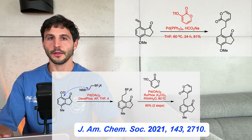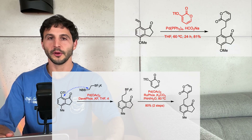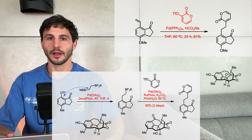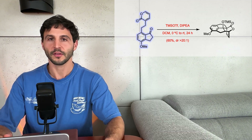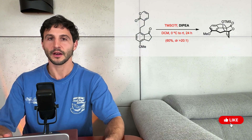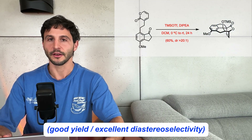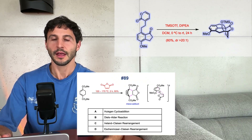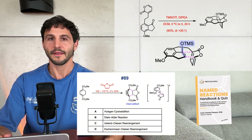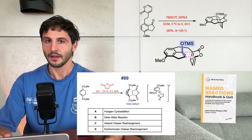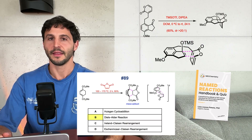Interestingly, an alternative synthesis via an iterative Suzuki cross-coupling was proposed previously for the synthesis of cephanolite natural products, which share a similar framework. Subjecting the substrate to TMS triflate under soft enolization conditions affords the racemic pentacycle in excellent yield. This transformation likely proceeds through a [4+2] cycloaddition between the pyrone group and the in-situ generated enol. This reaction is an intramolecular inverse electron demand Diels-Alder reaction.